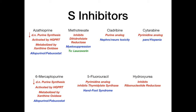Mnemonic: think of a 'posse.' Teniposide and etoposide contain the word 'posse' in their names. A posse is two or more people, so these drugs inhibit DNA topoisomerase 2. By process of elimination, topotecan and irinotecan inhibit DNA topoisomerase 1. To remember why these are G2 agents: G2 is the DNA double-check phase, and topoisomerase double-checks that DNA is wound correctly — so inhibiting topoisomerase clearly acts in G2.